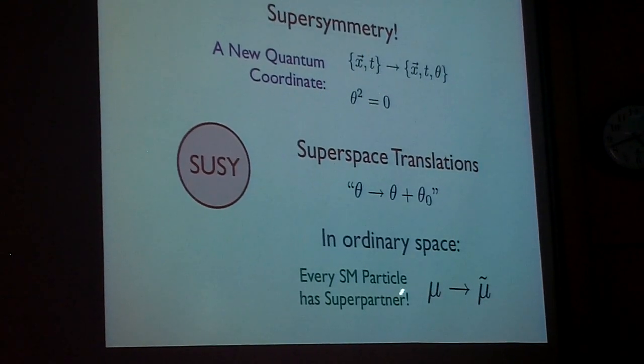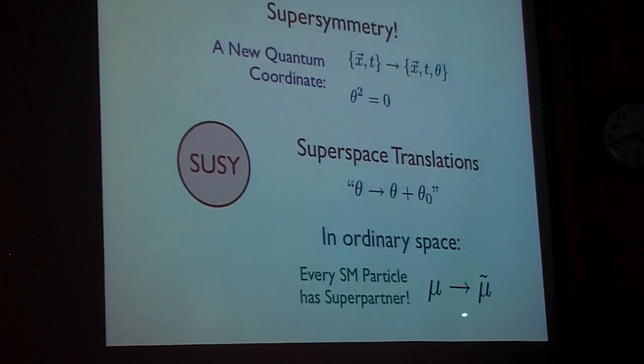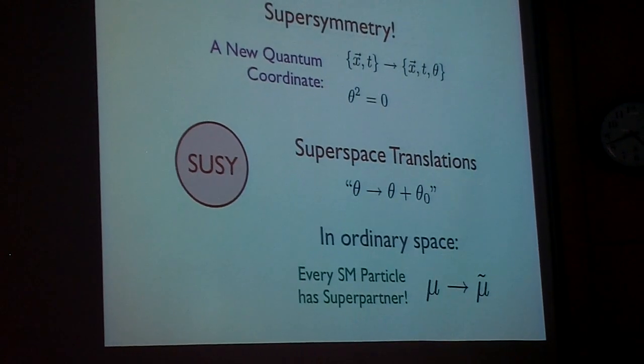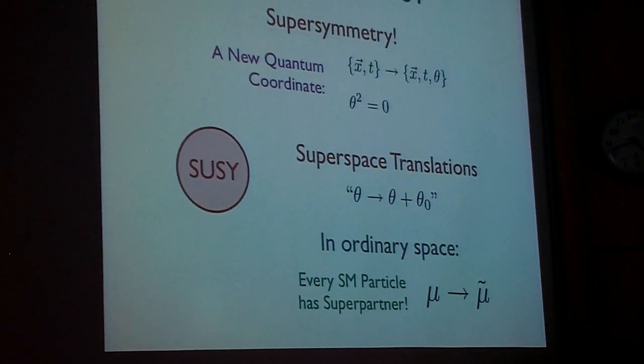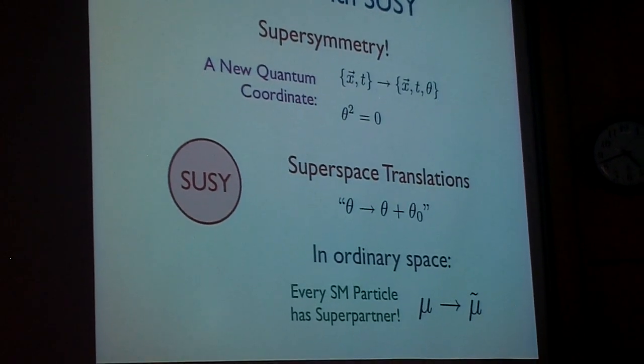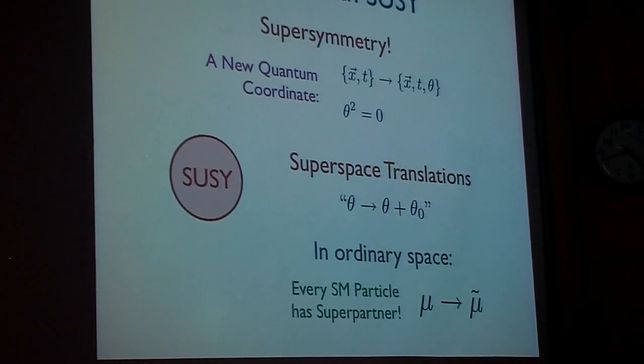And then this muon under supersymmetry gets mapped onto a bosonic partner, the smuon. And if supersymmetry were a good symmetry of nature, then, well, all the properties of the muon would be mapped onto the properties of the smuon apart from their spin statistics.